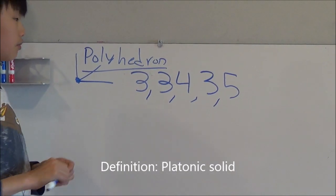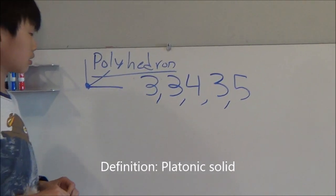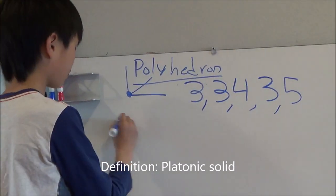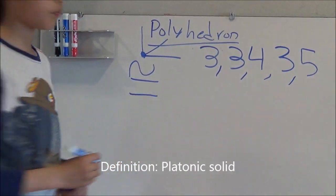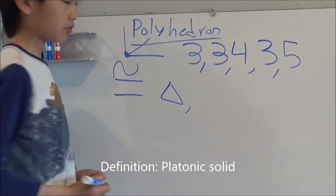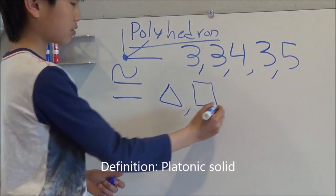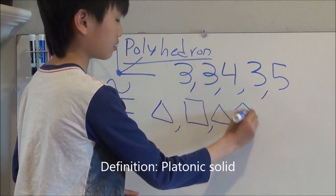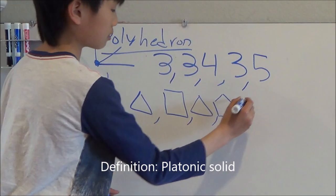But this isn't enough for a polyhedron to be a platonic solid. A platonic solid must also have all congruent faces. For the tetrahedron, that's a triangle. For the cube, that's a square. For the octahedron, that's a triangle again. For the dodecahedron, it's actually a pentagon. And for the icosahedron, it's again a triangle.